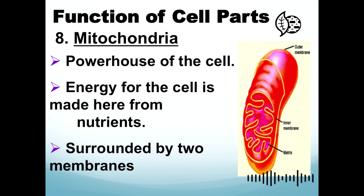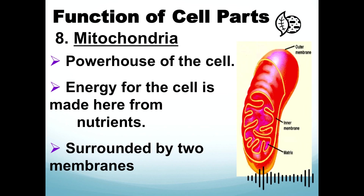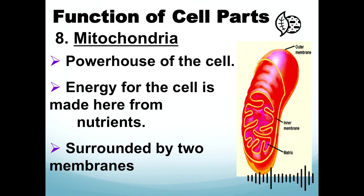Mitochondria is considered to be the powerhouse of the cell — this is where energy is supplied for the needs of the cell. The energy produced is transformed into ATP, or adenosine triphosphate, for cellular respiration. The mitochondria is surrounded by two membranes.